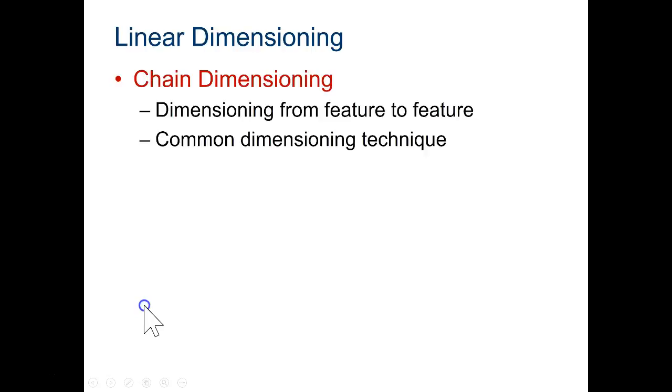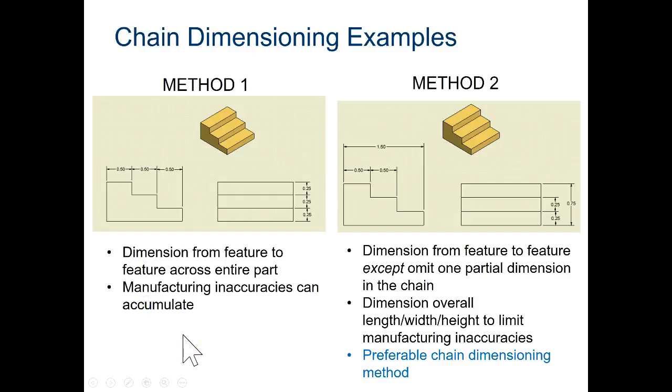Chain dimensioning is something that is used in architecture. It will result in manufacturing inaccuracies. So we will not be using this, but this is what it looks like. So you specify the length of each segment and that's how you would see that the total part is one and a half inches.